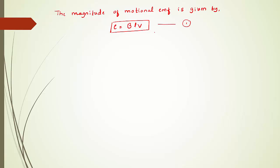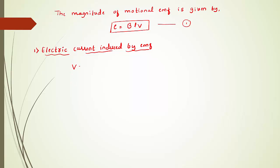Using equation one, let us learn about energy consideration in motional EMF. The first point is the electric current induced by EMF — we are going to write an expression for the electric current induced by EMF. We already studied Ohm's law: V = IR, where R is the proportionality constant called resistance. We can rearrange this as i = V/R.